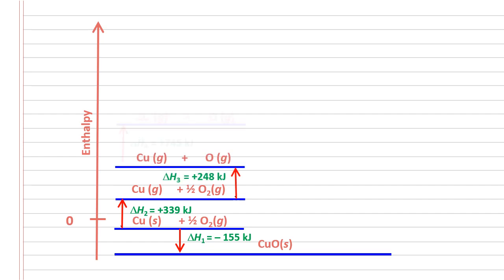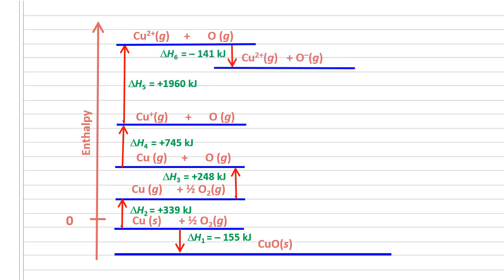Proceed with first electron affinity of oxygen. And then we have second electron affinity. So electron affinity is not always negative.